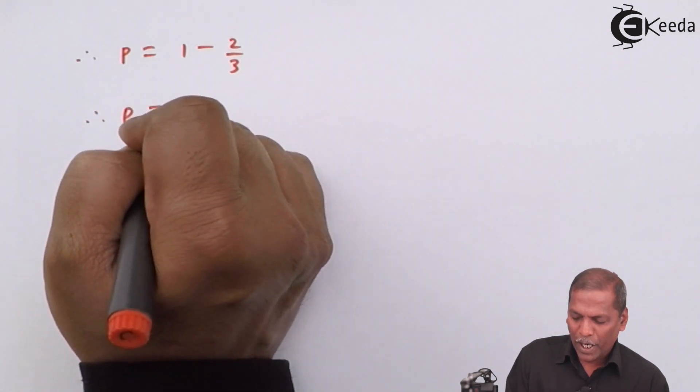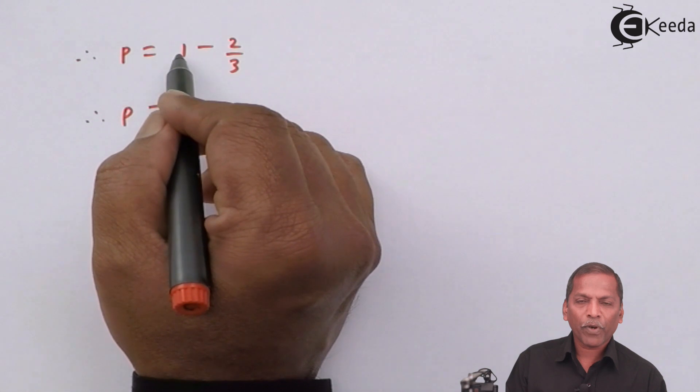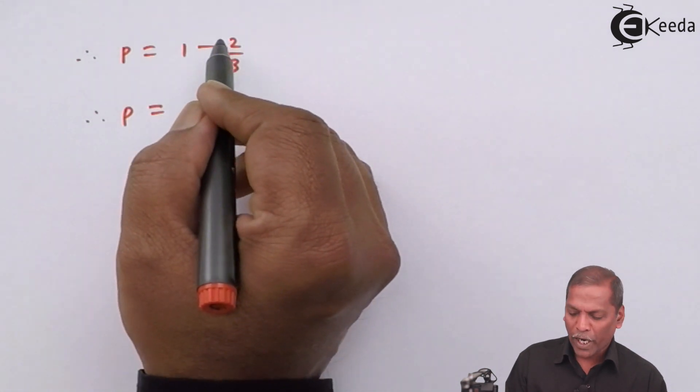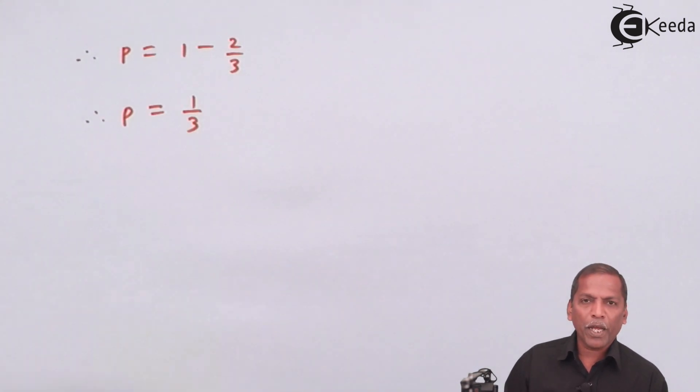Therefore, p is equal to. Now, here we go for cross multiplication. And on cross multiplying, we get 3 into 1. That is 3 minus 2. We get 1 upon 3. So it means we get p equal to 1 upon 3.